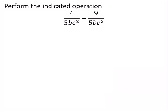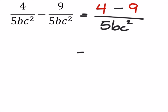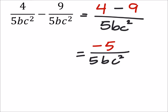On this one we're subtracting, but once again the denominators are the same, which makes this very nice. So this is going to equal — I have that common denominator, 5bc squared, and the operation is subtraction. We got 4 minus 9, and 4 minus 9 is going to be a negative 5 over the 5bc squared.